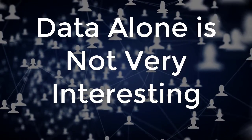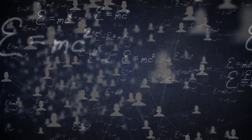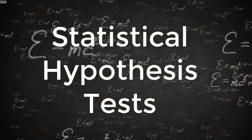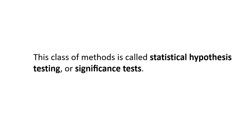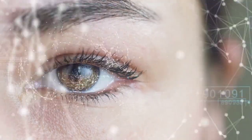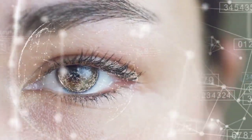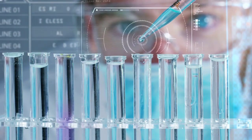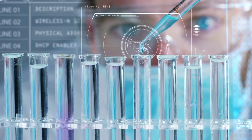Data must be interpreted in order to discover meaning. You can interpret data by assuming a specific structured outcome and use statistical methods to confirm or reject the assumption — the assumption is called a hypothesis, and the statistical tests used for this purpose are called statistical hypothesis tests. Whenever you want to make a claim about the distribution of data, or whether one set of results differs from another in applied machine learning, you must rely on statistical hypothesis tests. In statistics, when you wish to ask questions about the data and interpret the results, you use statistical hypothesis testing, also called significance tests. A hypothesis test calculates some quantity under a given assumption, and the result allows you to interpret whether the assumption holds or has been violated.